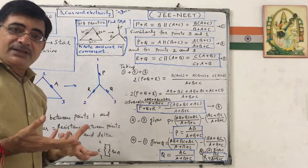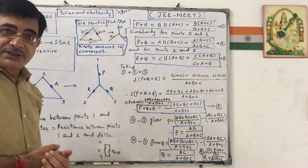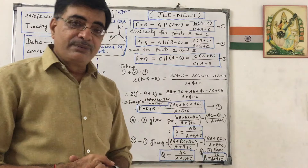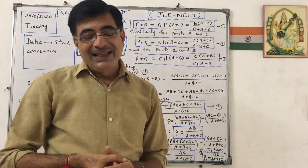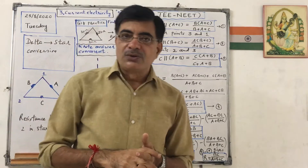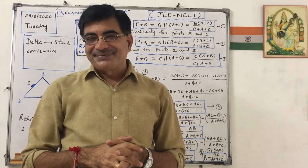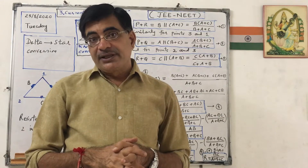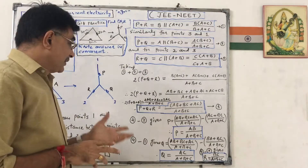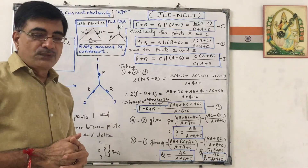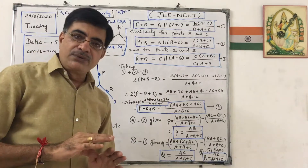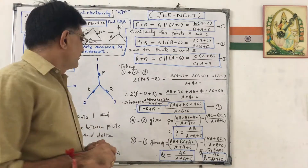Now what is actually the use of this delta to star conversion? In this lecture we are discussing delta to star conversion; next time we will be discussing star to delta. Actually it is very useful in electrical engineering. You must have heard about three phase three wire connection, so to find out the resistance of that connection we need this type of analysis. It will be useful in future — here you have to consider resistance, but in future you will be calling it impedance.